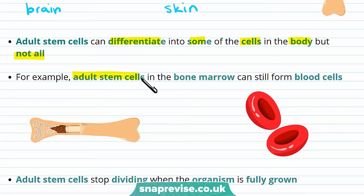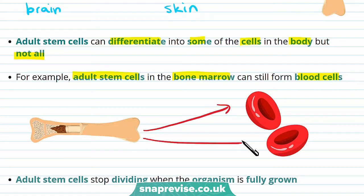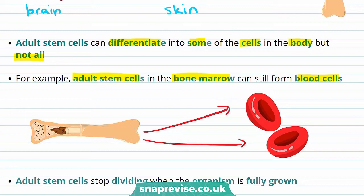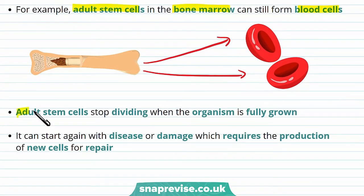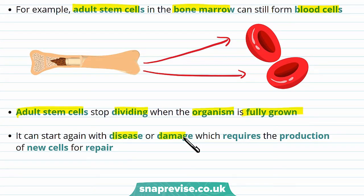For example, adult stem cells in the bone marrow can still form blood cells, and that means if you lose some blood your bone marrow can still produce red blood cells. Another difference between embryonic and adult stem cells is that adult stem cells stop dividing when the organism is fully grown, and they can start again with disease or damage, because it requires the production of new cells for repair.